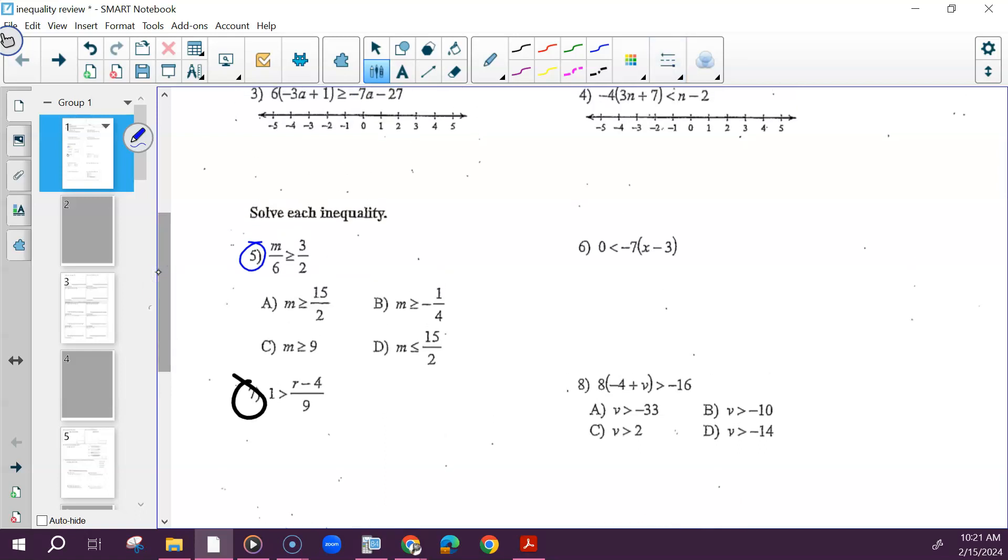For number five, you would do this like a normal equation, cross-multiply. Whether you put 2m on the left or the right doesn't matter. You also could have, because it's multiple choice, tried to put these numbers in for m to see which one made it true. And only 9 would have made that true.